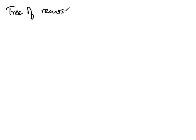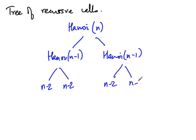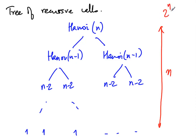Another way to see how this works is to draw the tree of recursive calls. If we write the code as Hanoi of n, it calls Hanoi of n minus 1 twice, and each of those calls Hanoi of n minus 2 twice, going all the way down until we reach Hanoi of 1 at the leaves. We have a complete binary tree of height n, which has 2 to the n minus 1 nodes. Every node corresponds to one function call and therefore one basic move, giving 2 to the n minus 1 total moves.